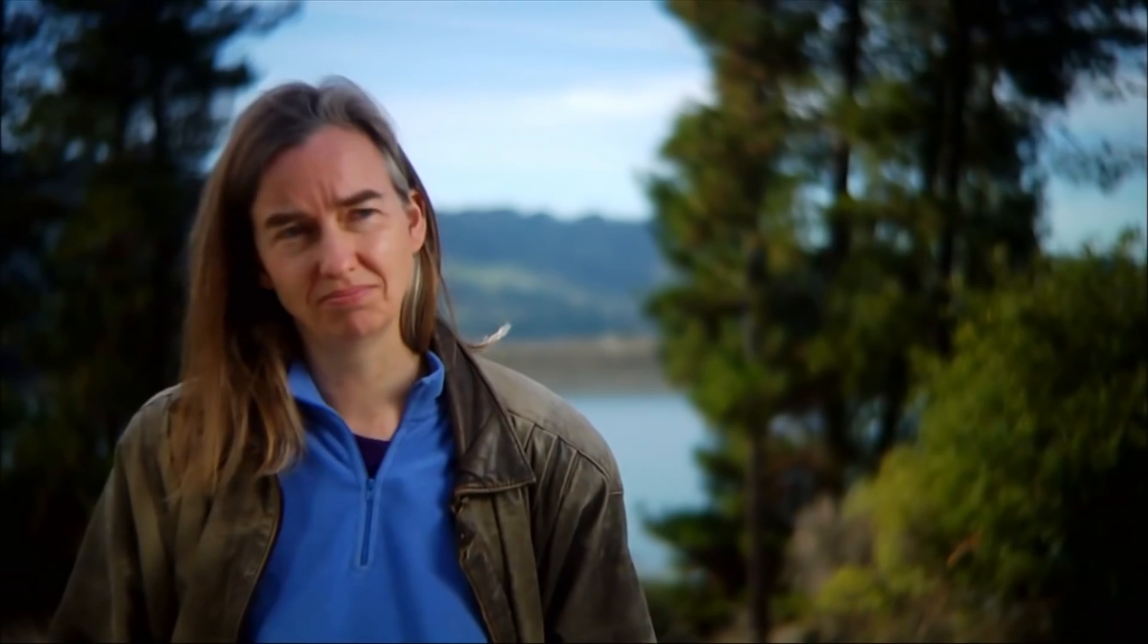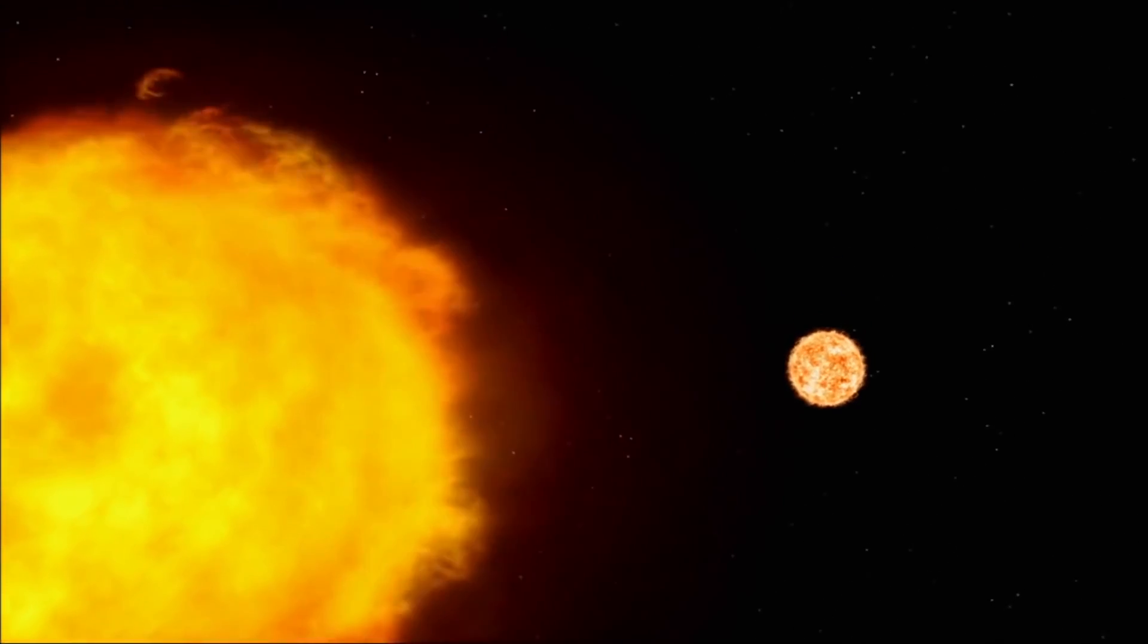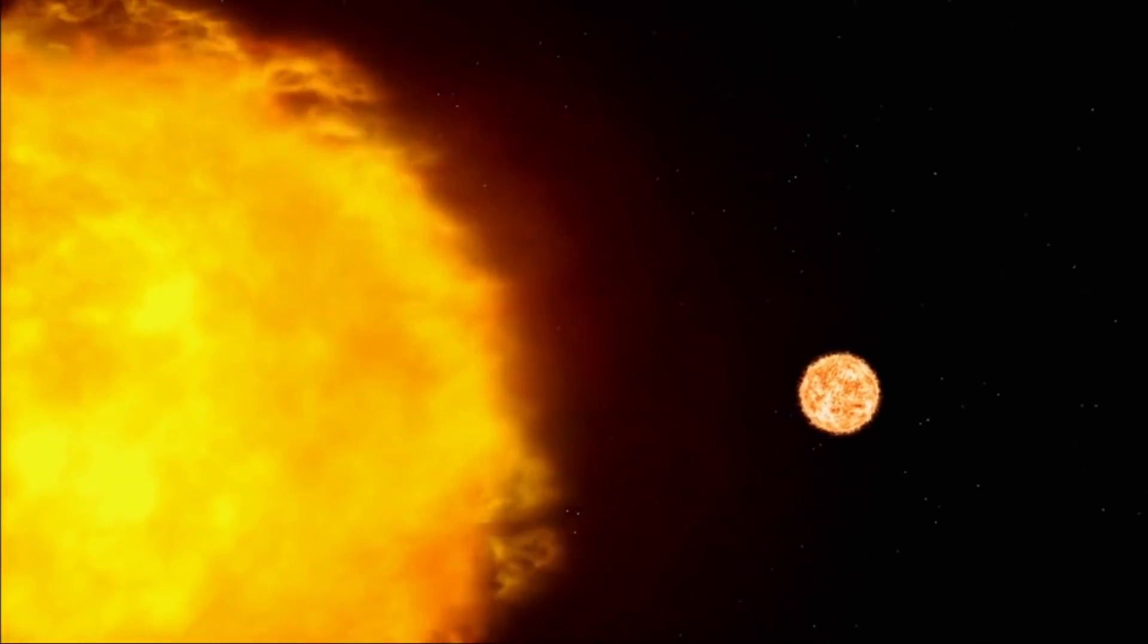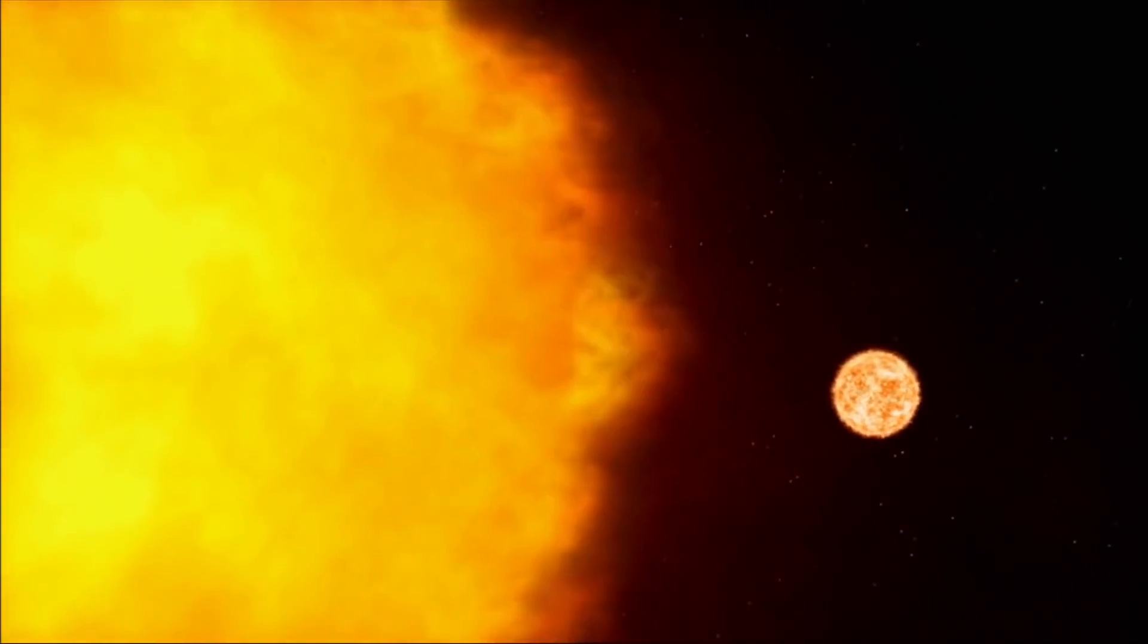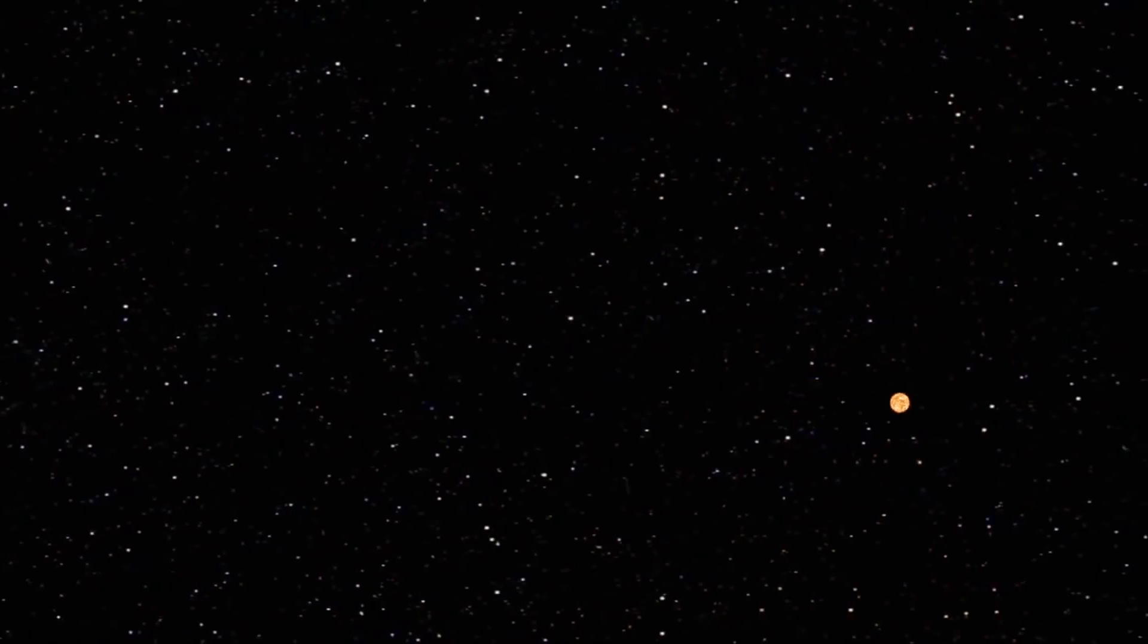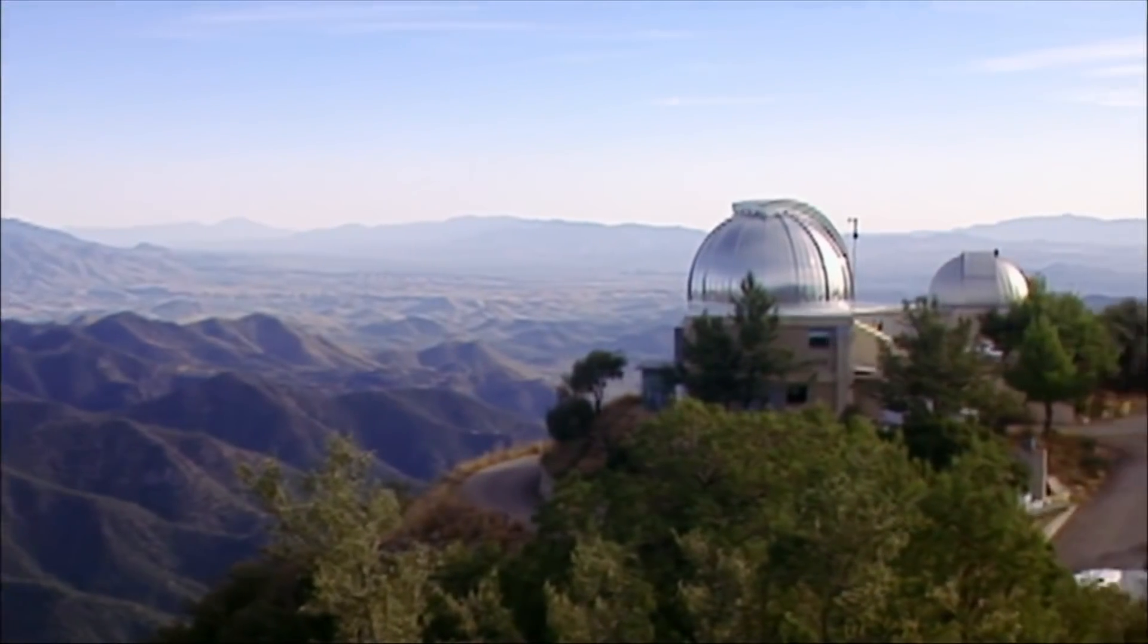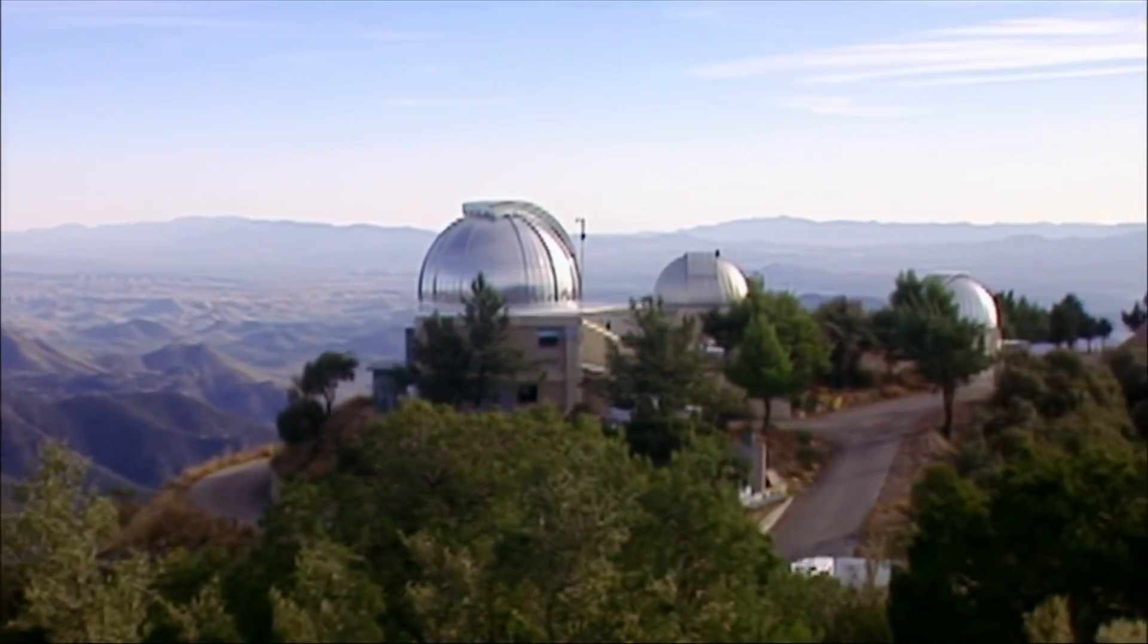Even if the sun could conceivably have a binary companion, astronomers have never observed a binary system in which the pair of stars are as far apart as Muller claims our sun and nemesis would be.